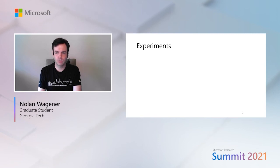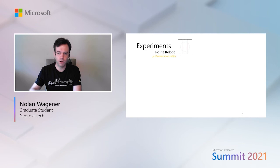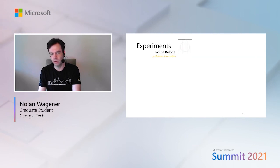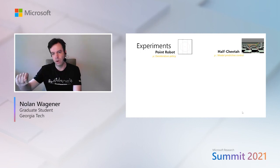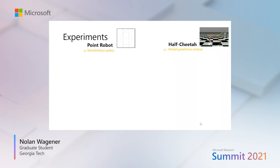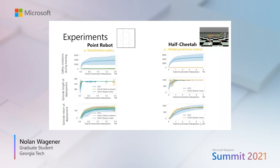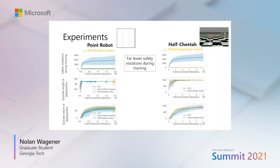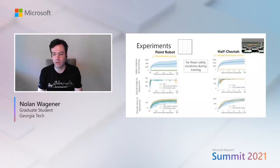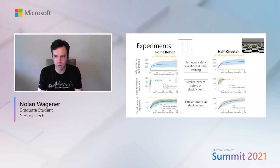We give experimental results on two tasks. The first is a point robot we want to move quickly in a counterclockwise direction without touching the vertical red lines; the baseline policy tries to slow the robot to a stop. The second is a half cheetah we want to run fast while keeping the link circled in green within a given height range; the baseline policy is a model predictive controller. We compare SAILOR against the constrained RL algorithm CPO. The results validate the theory: we violate constraints far less frequently during training compared to CPO — in some cases not at all — while achieving essentially the same safety and returns as CPO at deployment.